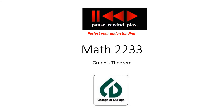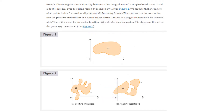Hello again. This is Math 2233 coming to you from the College of DuPage. The title of this lecture is Green's Theorem. Please be an attentive listener as you watch this video. Green's Theorem gives the relationship between a line integral around a simple closed curve C and a double integral over the plane region D bounded by C. It's kind of a strange theorem, but it came from applications in the study of electrical engineering.